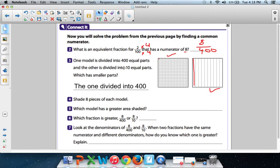They're saying which pieces are smaller. And if you cut something into 400 pieces, yeah, you're going to have really small pieces. But if you cut something into 10 pieces, they won't be nearly as small.